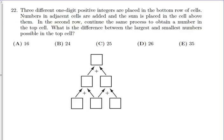This is problem number 22 from the 2006 AMC 8 math competition. It starts by saying three different one-digit positive integers are placed in the bottom row of cells. We get to choose these bottom three as long as they're different and all one digit.